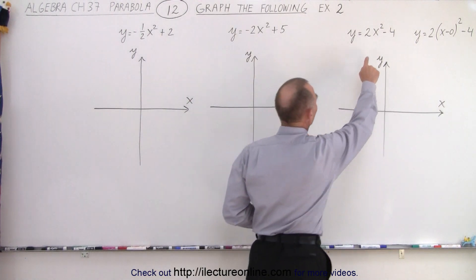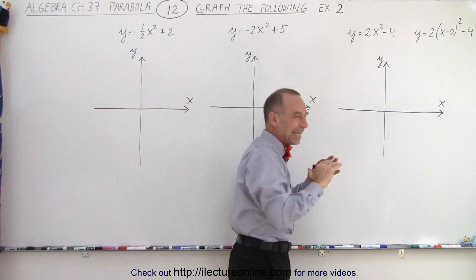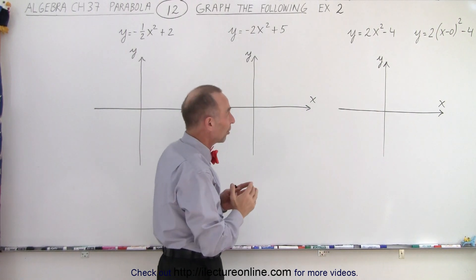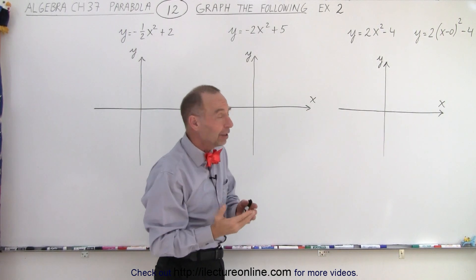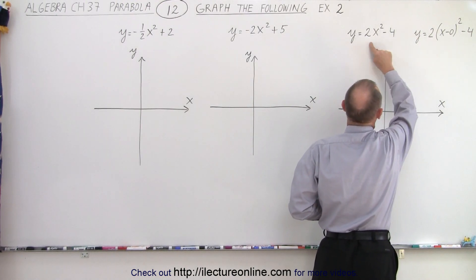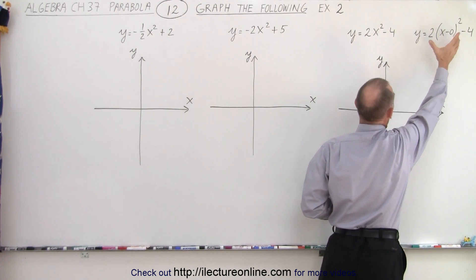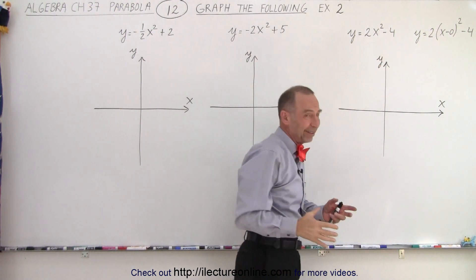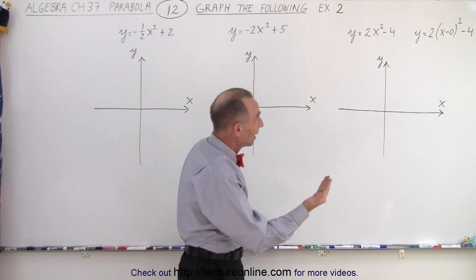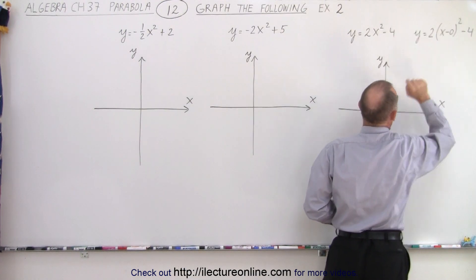Notice that here we have y equals 2x squared minus 4. So we don't have the quantity x plus something or x minus something. What we can think of is we can make this look exactly the same. Notice there's no difference mathematically between these two. We simply have x minus 0 quantity squared instead of just x squared. It's the same thing. But then you realize that there's no shift to the left or to the right because we have the number 0 there.